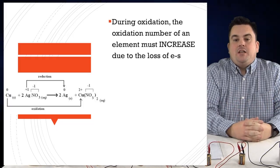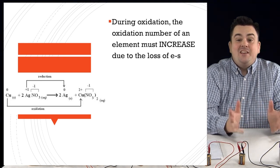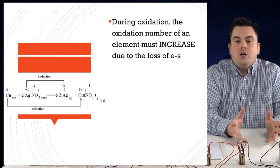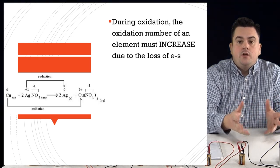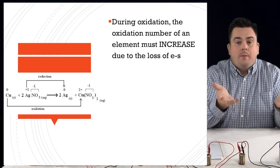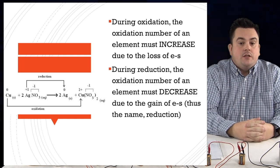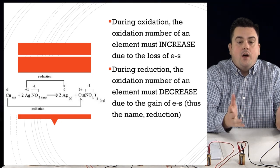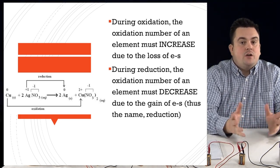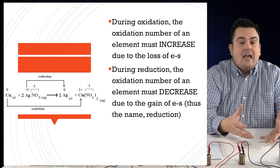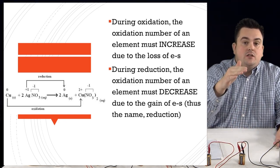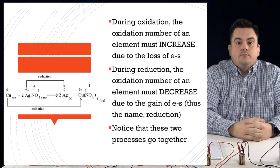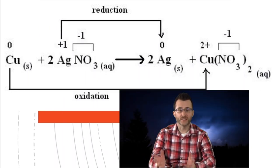During oxidation, the oxidation number of an element must increase due to the loss of electrons. Remember, electrons have a negative charge, so if you lose electrons your oxidation state goes up — becomes more positive. During reduction, the oxidation number must decrease due to the gain of electrons. Gaining electrons — gaining negative — means your oxidation number goes down. Notice that these two processes always go together.